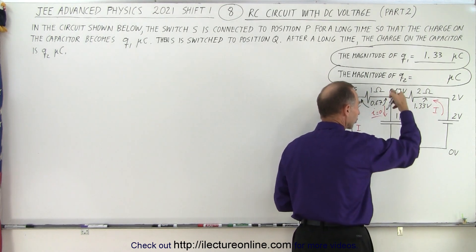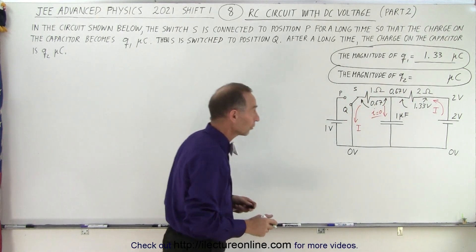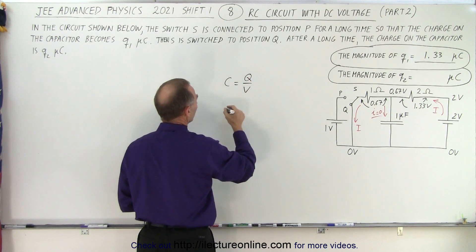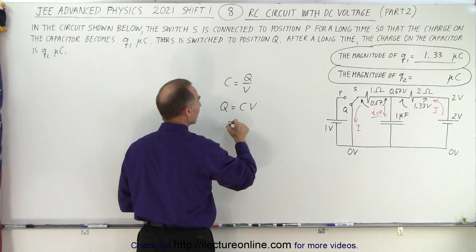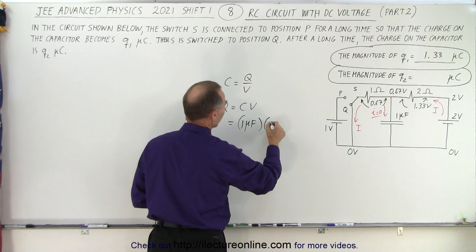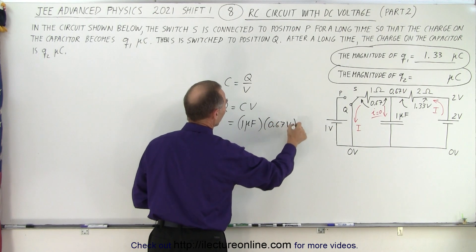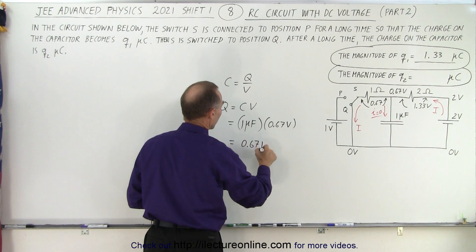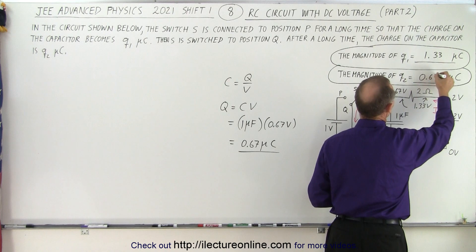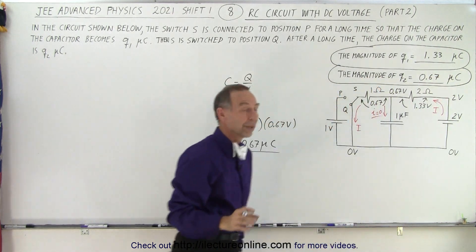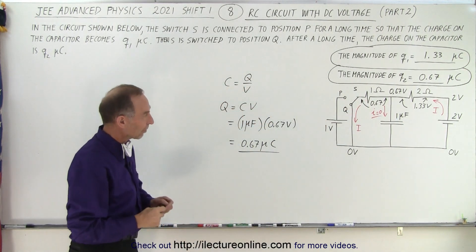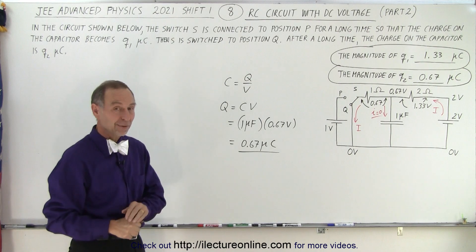So the potential across the capacitor is now 0.67 volts. Using Q = CV, where C is one micro farad and V is 0.67 volts, we get Q2 = 0.67 micro coulombs. That is the charge on the capacitor after the switch is moved to position Q, and that's how the circuit changes.